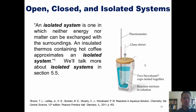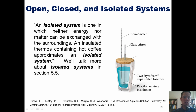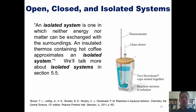We mentioned isolated systems earlier. An isolated system is one in which neither energy nor matter can be exchanged with the surroundings. An insulated thermos containing hot coffee, for example, approximates an isolated system — if the container cannot absorb or transfer heat or allow any matter in or out, we call it isolated. An insulated coffee cup is an approximation because styrofoam insulation does not transfer heat as readily as metal, but it still transfers some heat, so it isn't perfectly isolated. We will talk more about isolated systems in Section 5.5.